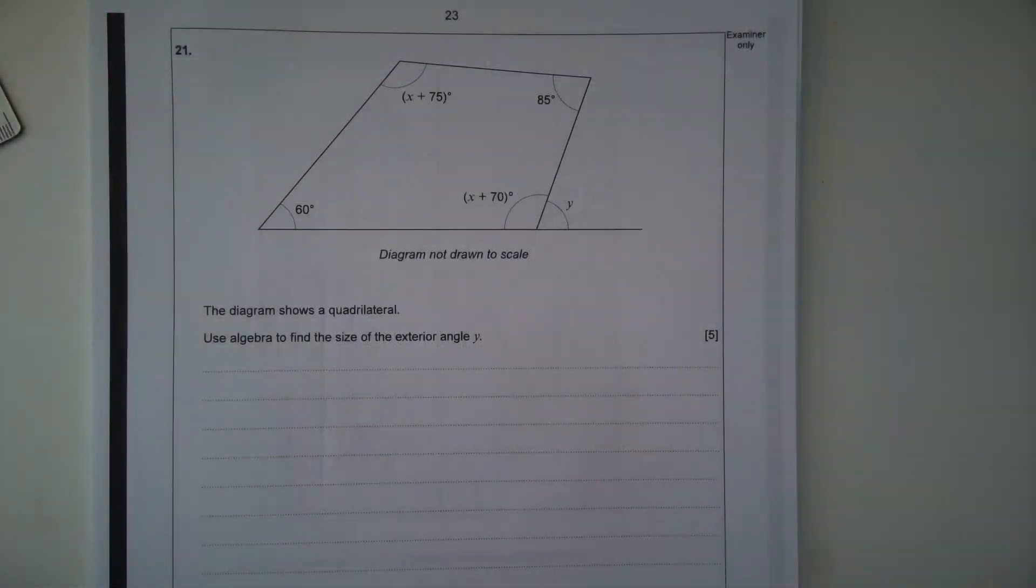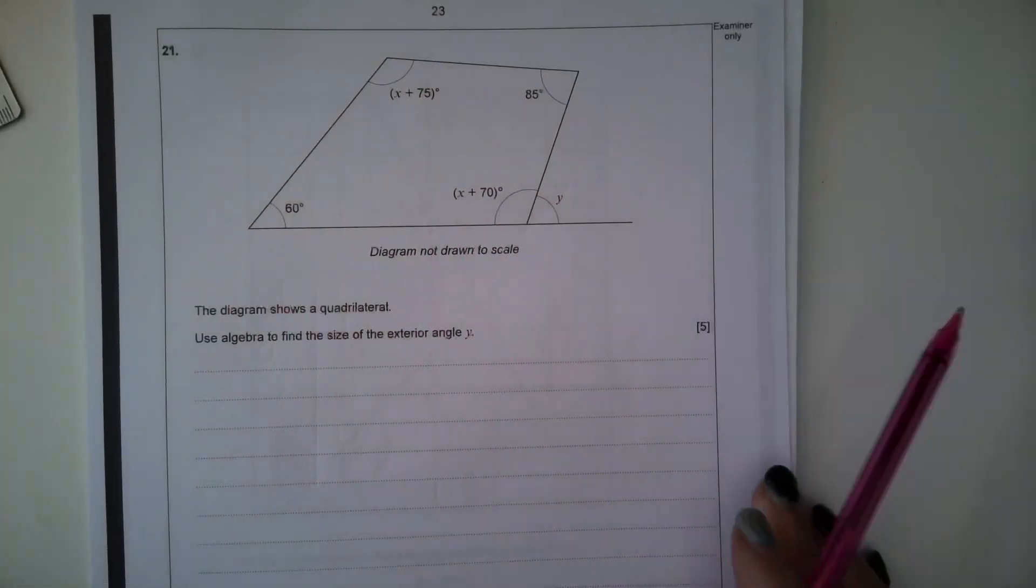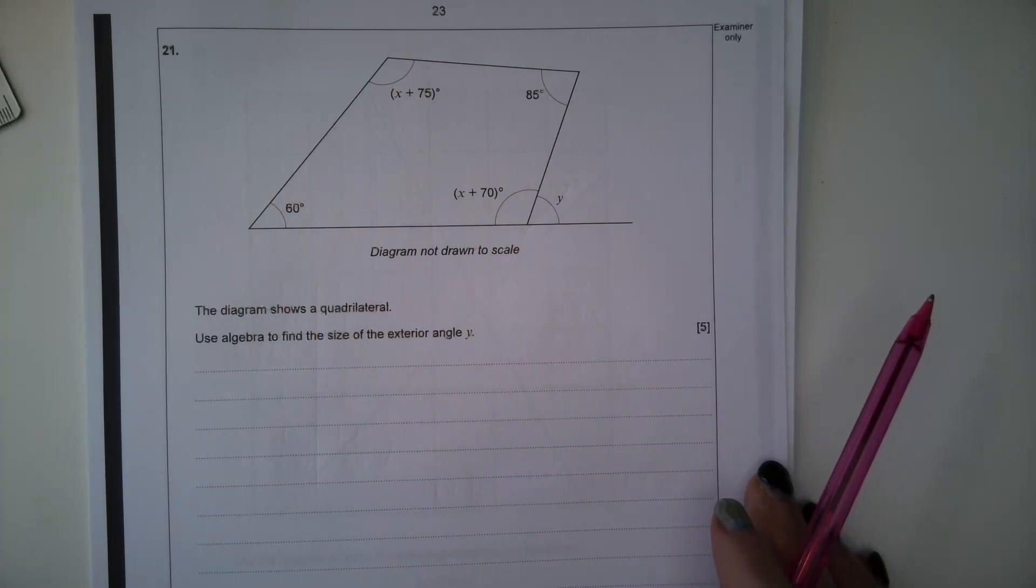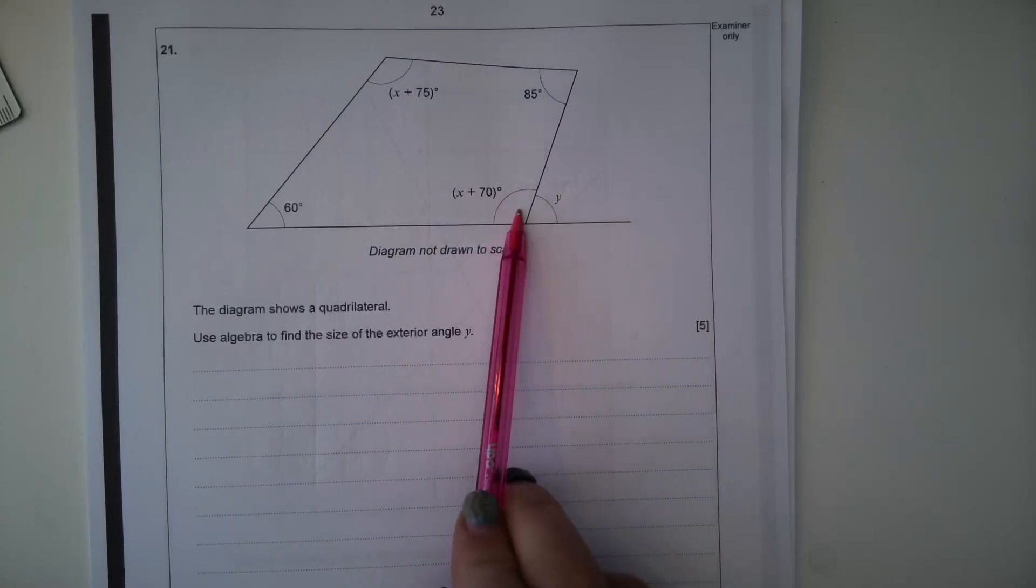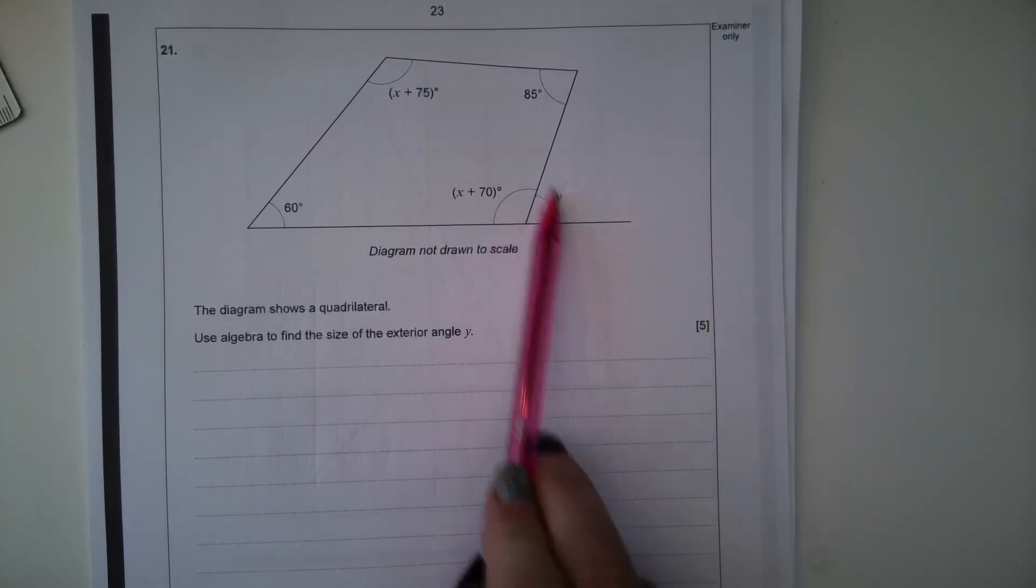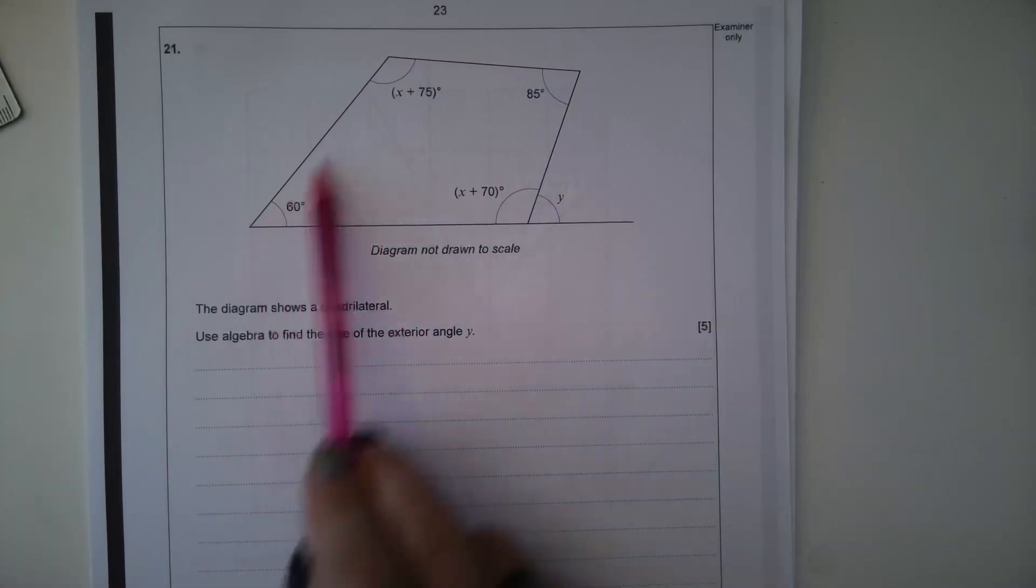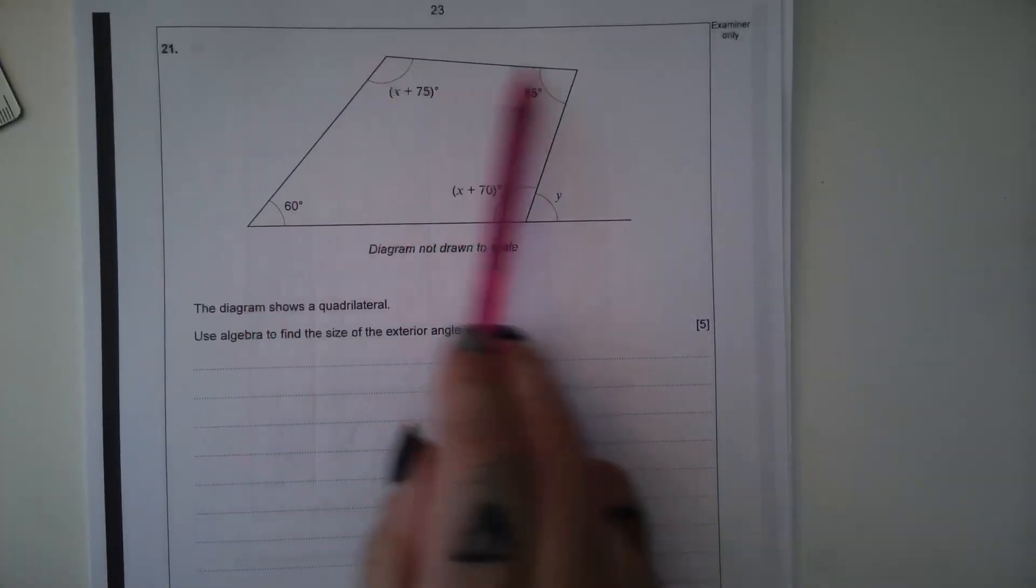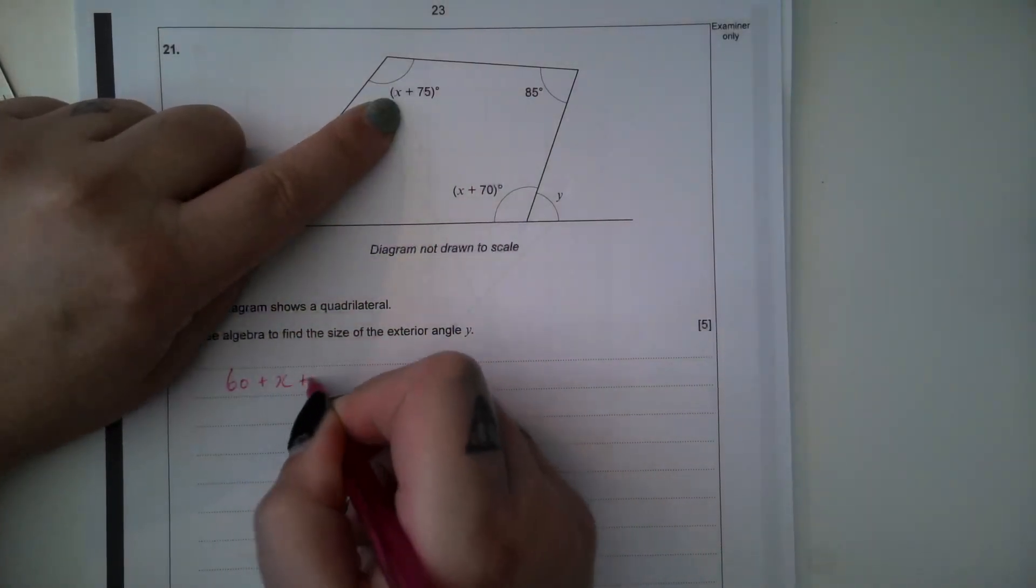Question 21. The diagram shows a quadrilateral, so we've got this four-sided shape. Use algebra to find the size of the exterior angle Y. So if we can find this angle here, this angle and Y both add up to 180 because it's a straight line. So we're going to form an equation for the angles inside this shape.